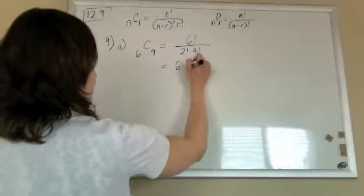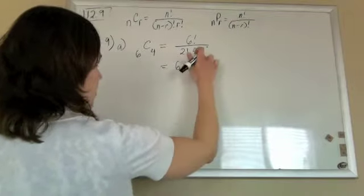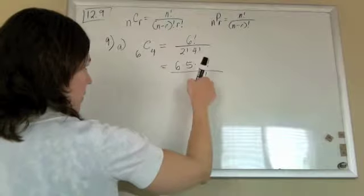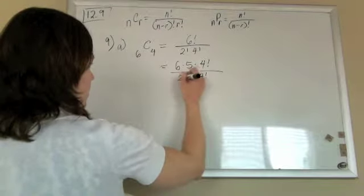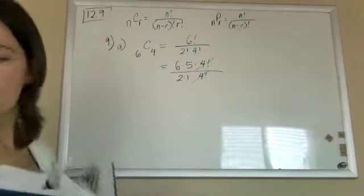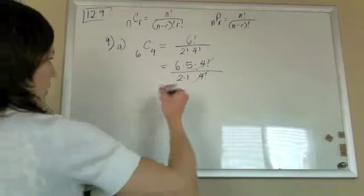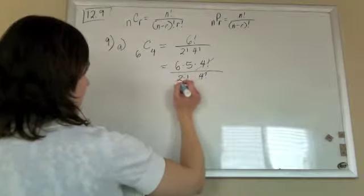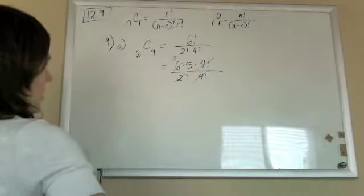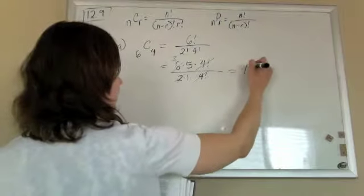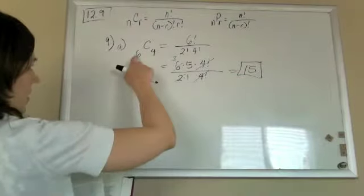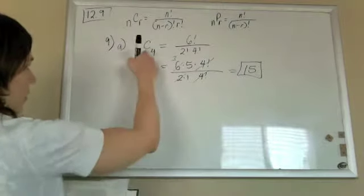And so to solve this, we have 6 times 5, and then I'm going to stop it at 4 factorial so that it will cancel out with the 4 factorial down there. And then that 2 factorial is 2 times 1. So everything on the bottom should end up canceling. If I take a 2 out of the bottom and take a 2 out of the top, you're just going to be left with 3 times 5 is 15. So 15 ways to have 6 things and choose 4 if you don't care about the order.